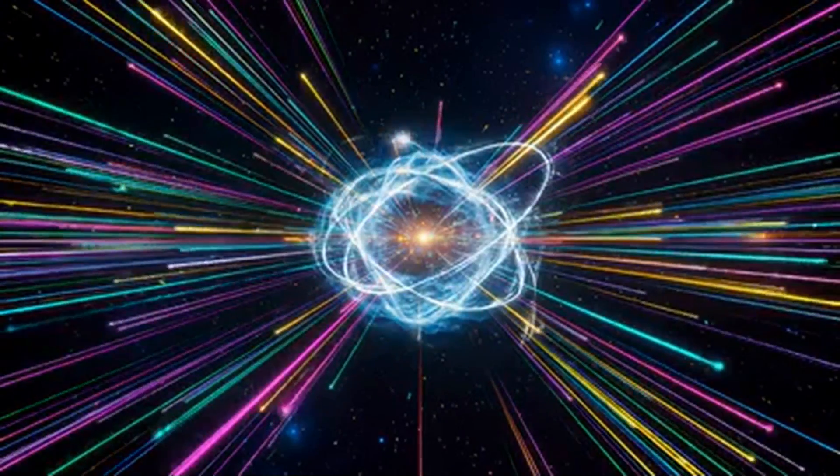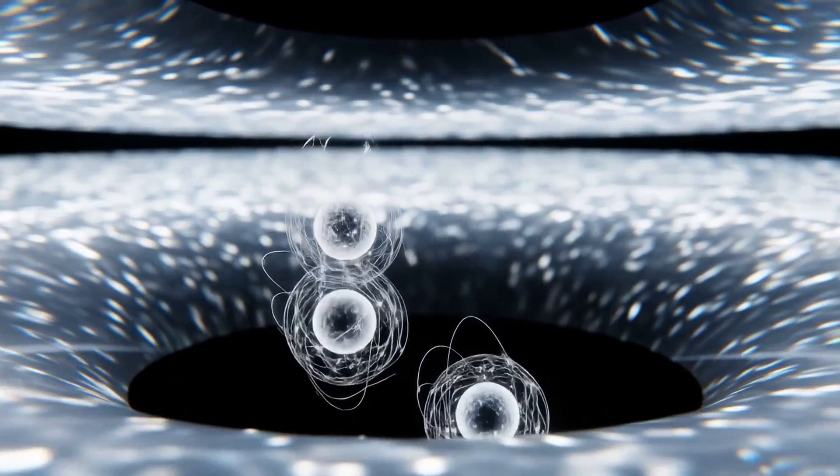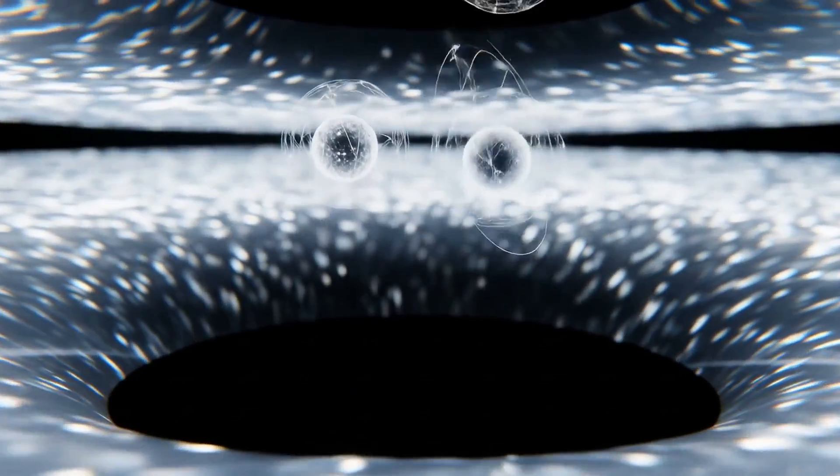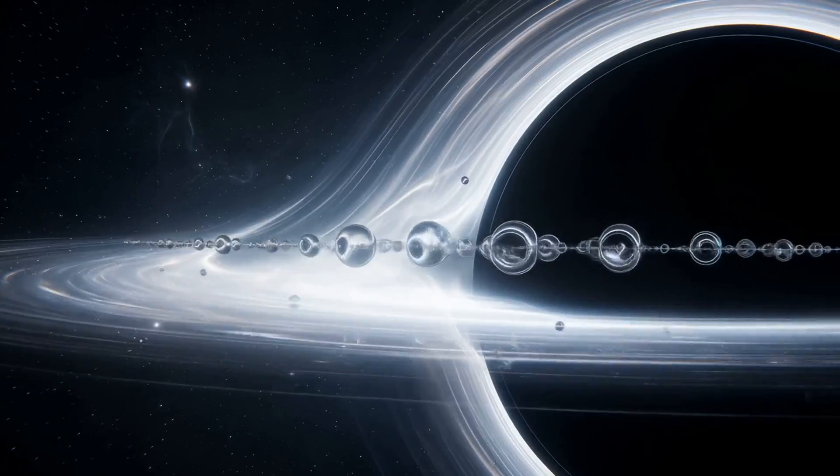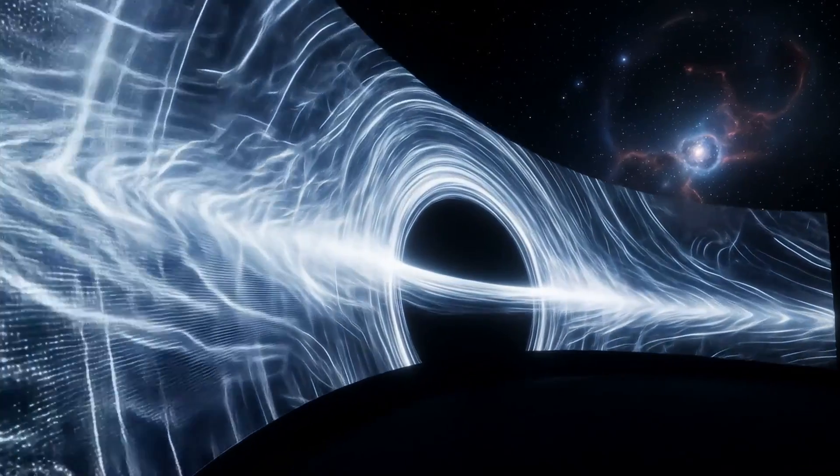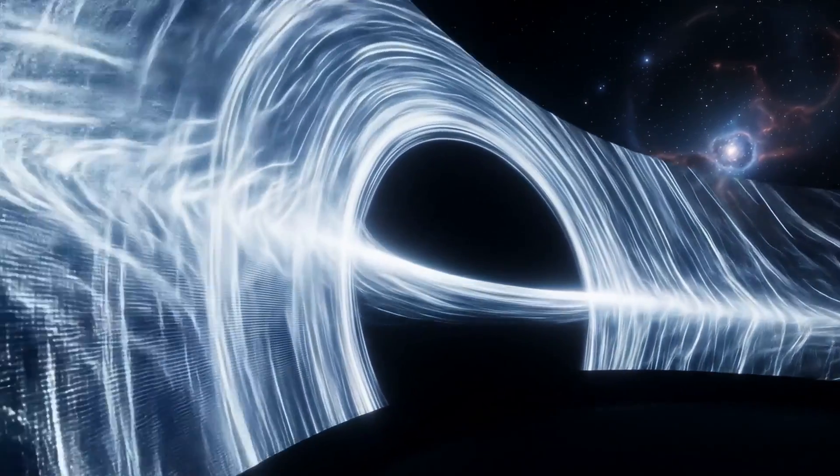You do not see the particle that falls in, but its twin on the horizon mirrors it exactly. This is how you witness the contents of a black hole, not by looking in, but by observing its entangled reflection on the event horizon. It is like watching a movie through a mirror, projected holographically onto the boundary of space-time.